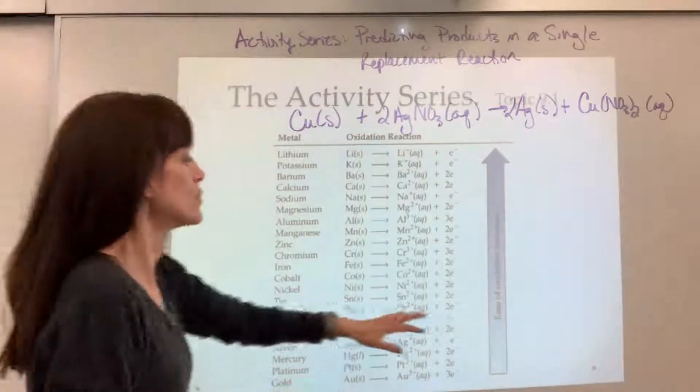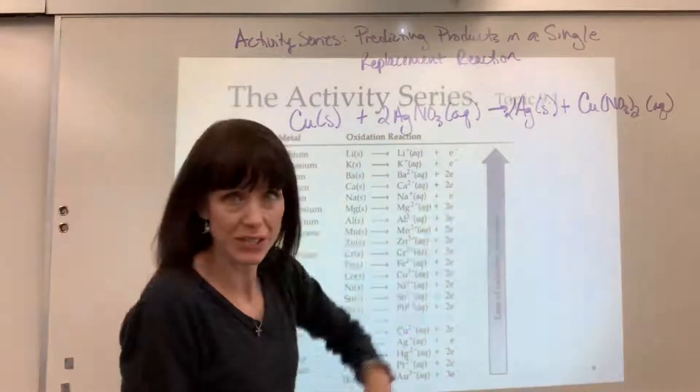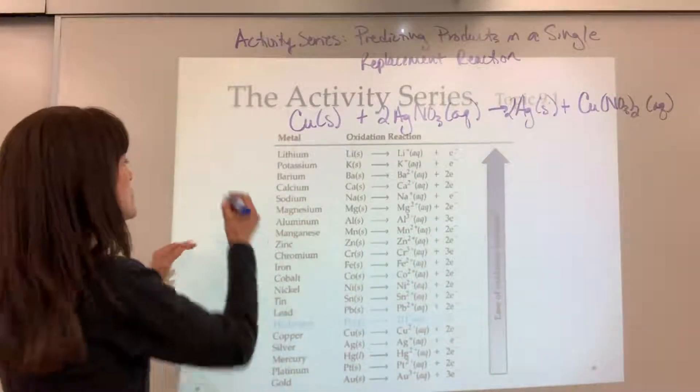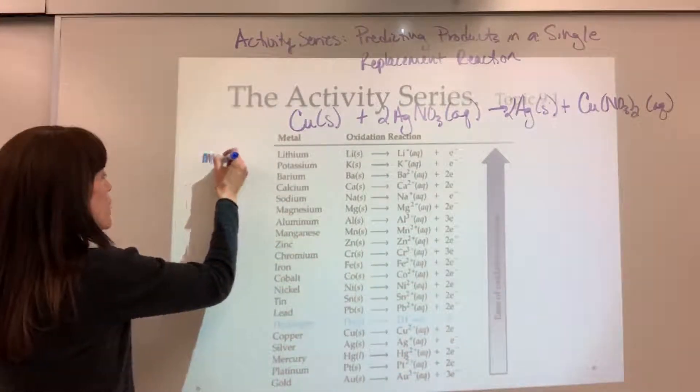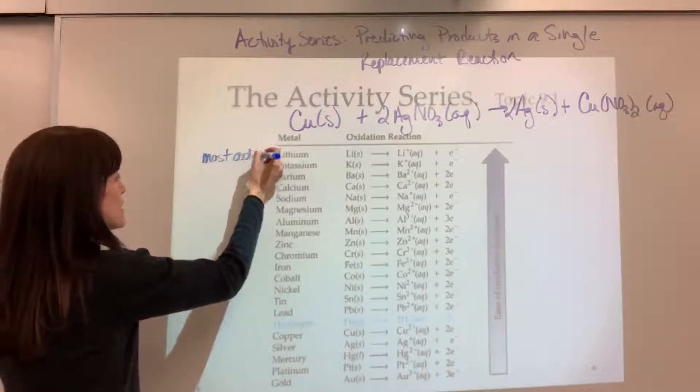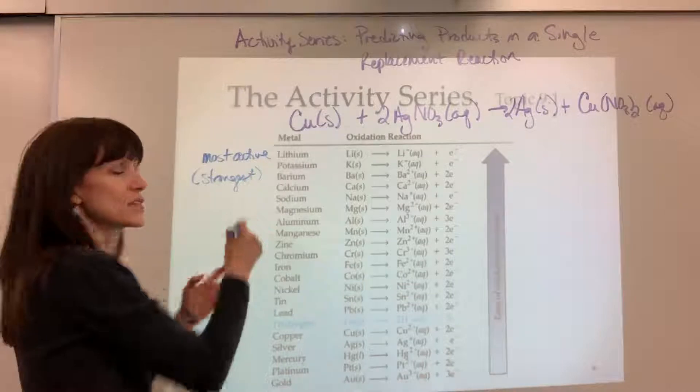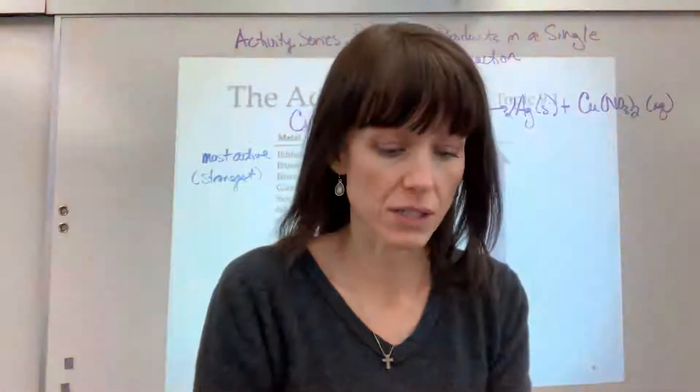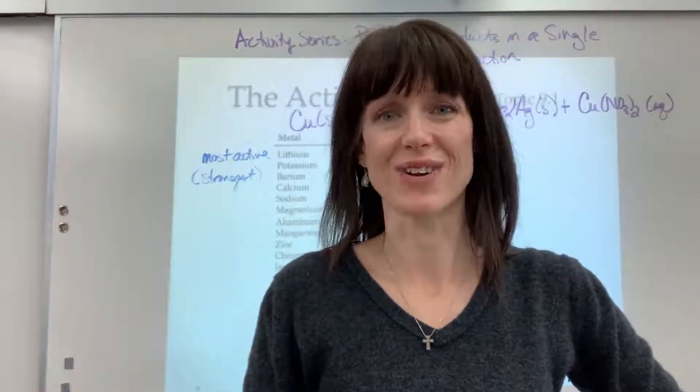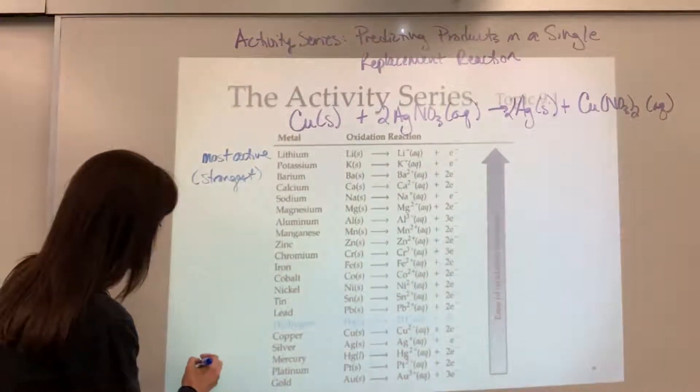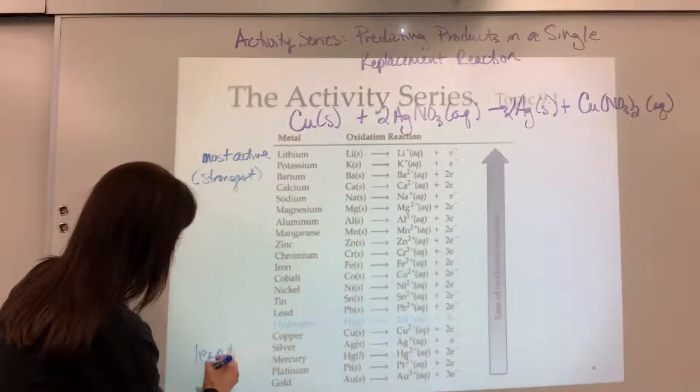Here's the trick. This says ease of oxidation increases, meaning that lithium at the top is going to be the most active. I'm going to put in parentheses the strongest - that's what I want you to think. That is the most active, the strongest.